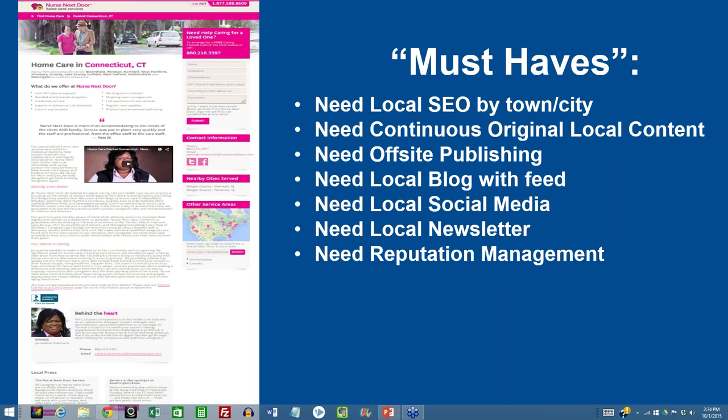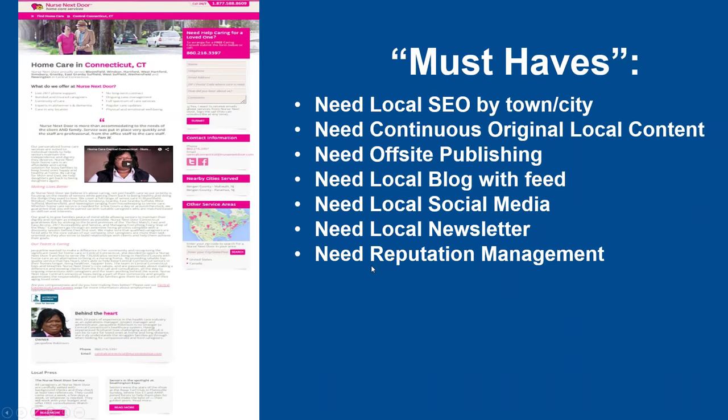You need continuous original local content — those little snippets and blurbs about events that hit your website and all your social media. You need off-site publishing, a local blog with a feed, and local social media including your own Facebook business page, LinkedIn account, and Twitter account. You need a local newsletter — this is how you avoid follow-up failure. When your e-newsletter goes out once a month with cool stories about what you were doing all month, people love to open, read, and engage with it. You also need reputation management — testimonials and reviews from people in your community.